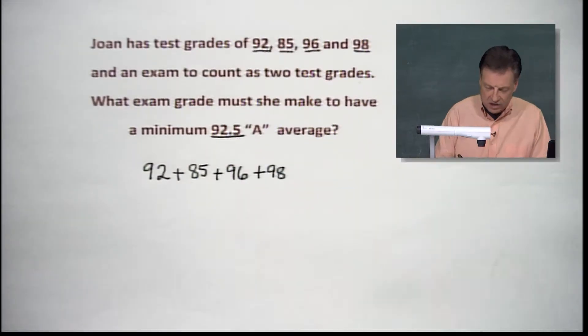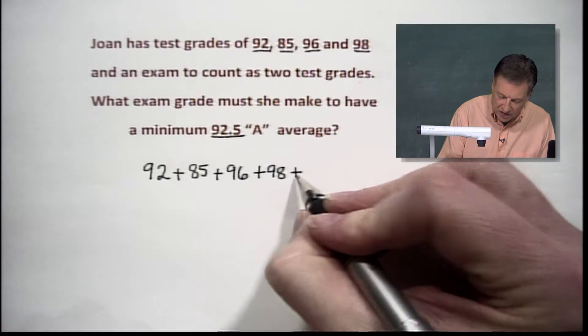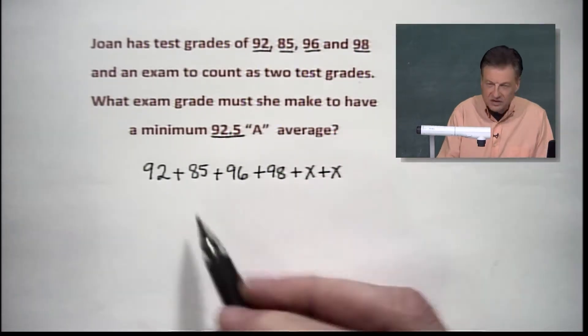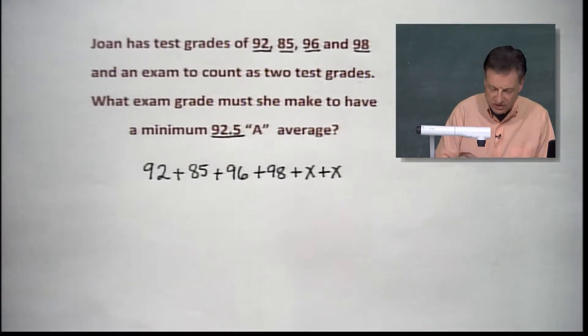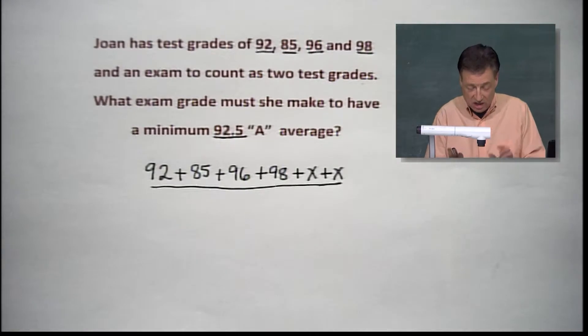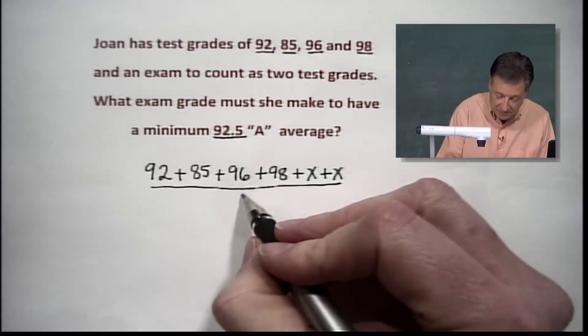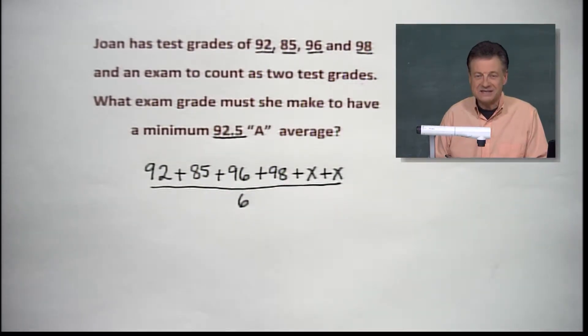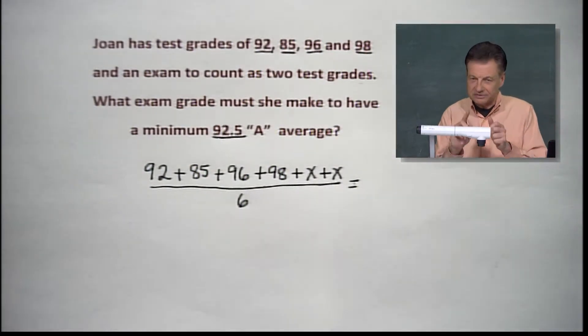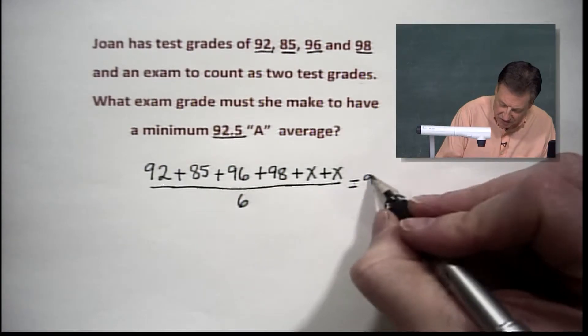So we've got two unknowns. They are the same amount, though, so this makes this rather easy. So we're going to take an X and another X, and that's going to give us all six grades. Now, what do we do with those? We're going to divide them by the number because that's how we find an average. We take, add them together, and divide by the total number, which happens to be six in this problem. And we're going to say that is equal to, you got it, 92.5, yes, there we go.